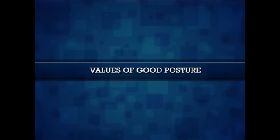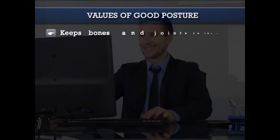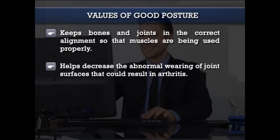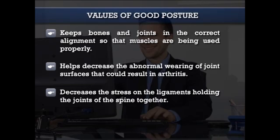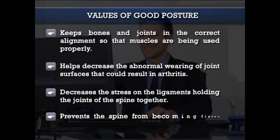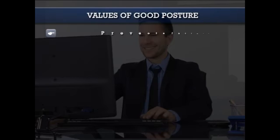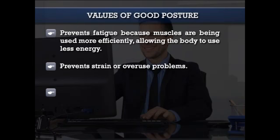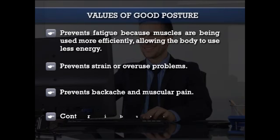Here come the values of good posture. Posture is the position in which we hold our body upright against gravity while standing, sitting or lying down. Good posture keeps bones and joints in the correct alignment so that muscles are being used properly. It helps decrease abnormal wearing of joint surfaces that could result in arthritis, decreases stress on ligaments holding the joints of the spine together, prevents the spine from becoming fixed in abnormal positions, prevents fatigue, prevents strain or overuse problems, prevents backache and muscular pain, and contributes to a good appearance.